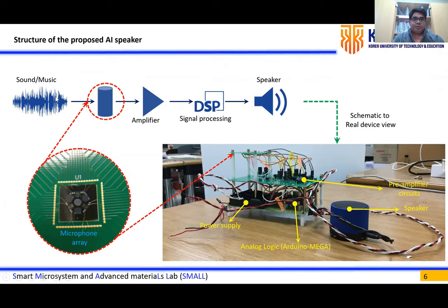The basic structure of our proposed AI speaker uses sound or music as input. To sense it, we have a microphone array, followed by an in-house designed pre-amplifier — a front-end amplifier — and then signal processing via analog logic to select the maximum signal. After the max selector, an audio amplifier reconstructs the maximum signal and one speaker outputs the reconstructed signal. The real view of the device includes a power supply, analog logic, pre-amplifier circuit, and speaker.